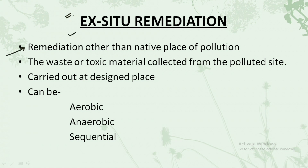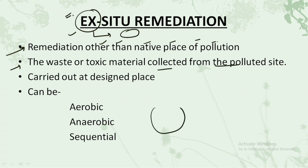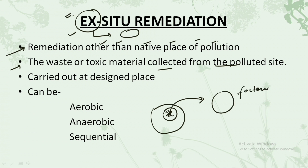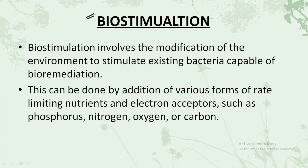In ex situ remediation, treatment occurs other than at the native place of the pollution. 'Ex situ' means outside the place of pollution — the toxic or waste material is collected from the polluted site and transported to another location, such as a factory or a designated place, in order to treat it. Ex situ remediation could be aerobic, anaerobic, or sequential depending on which type of material is being treated.